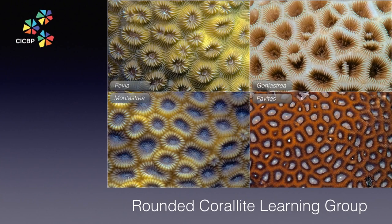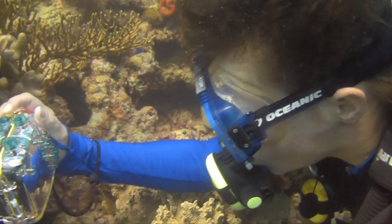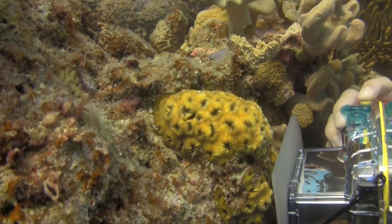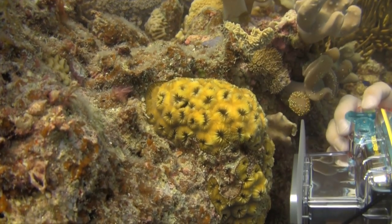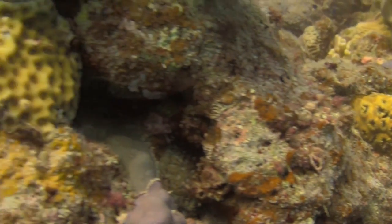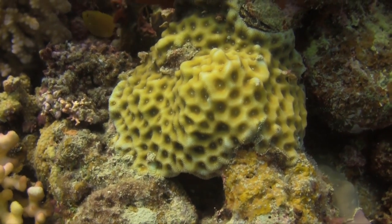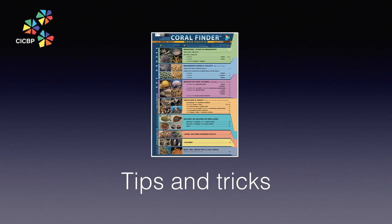That finishes our epic journey through the rounded coralite learning group. I hope you can see how chunkalizing problems helps the human mind to keep the coral chaos under control. By mastering the coral finder's glossary terms, key groups, and learning groups, you will have the tools you need to identify over 70 hard coral genera. Remember, the best way to improve at coral identification is to spend more time in the water looking at corals. Finally, here are some tips for what to do if you can't find your coral genus using the coral finder. Tip number one: change key group. Always keep an open mind and be prepared to change the key group, even if you need to bend the logic a bit.